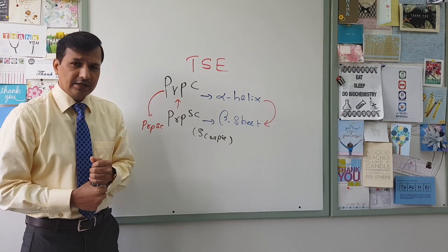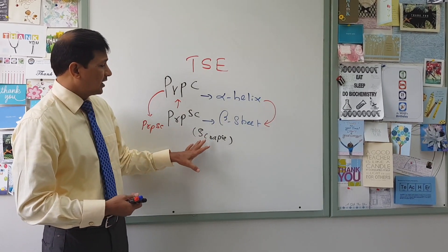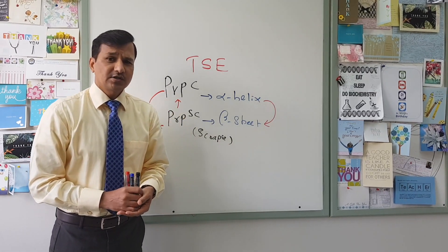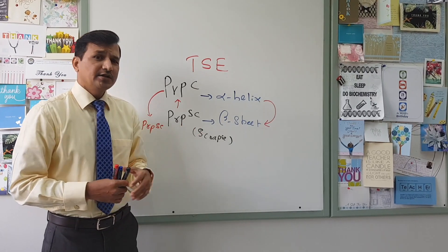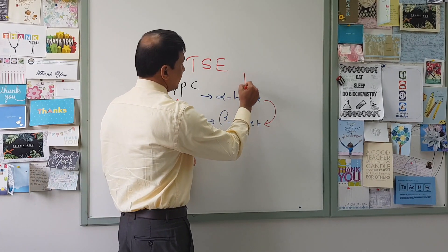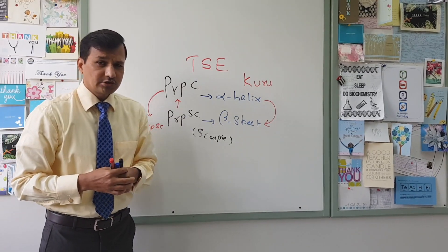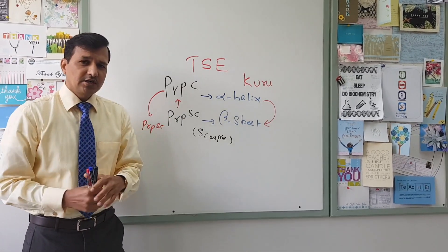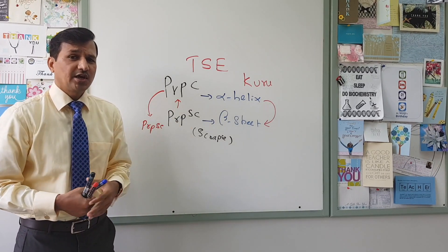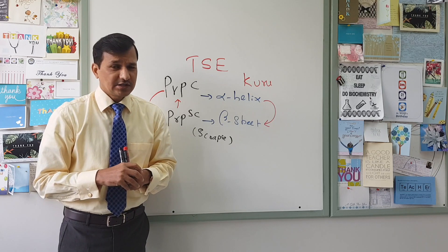This is what prion disease is. Creutzfeldt-Jakob disease is a human prion disease. Like that, we have prion disease in sheep — that is scrapie. We have prion disease in cows — that is mad cow disease. Prion disease is also seen in tribes in Africa called Kuru — K-U-R-U — a type of prion disease seen in Kuru tribes in Africa. There will be neurological signs and symptoms seen in prion disease because of the spongiform change going on in the brain, causing all neurodegenerative signs and symptoms.